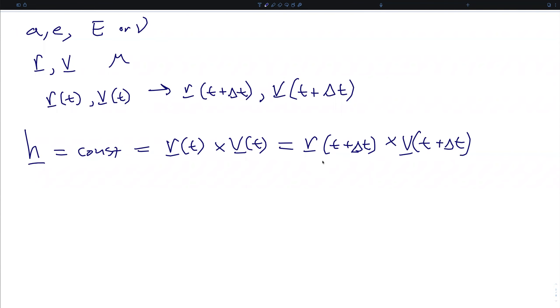and it's also going to be equal to the exact same cross product at the time delta t later. We can now plug in our new f and g function expressions into these two terms so that R of t plus delta t is f r plus g v.